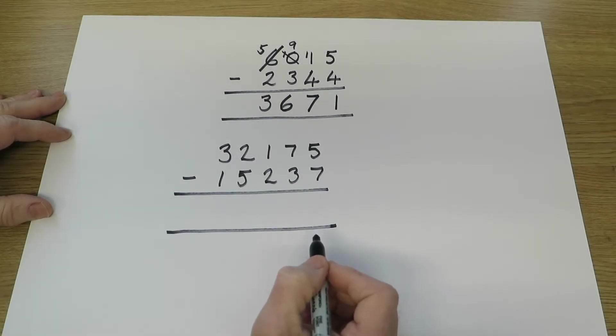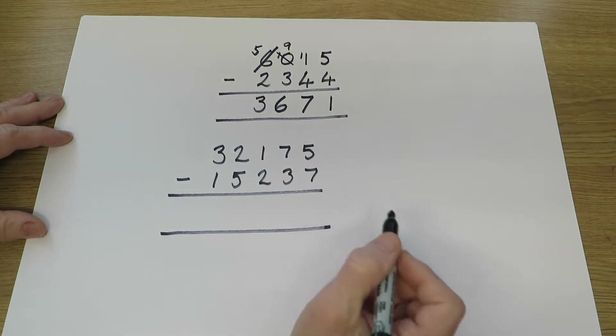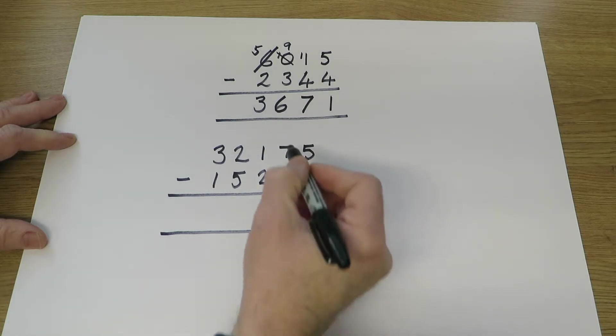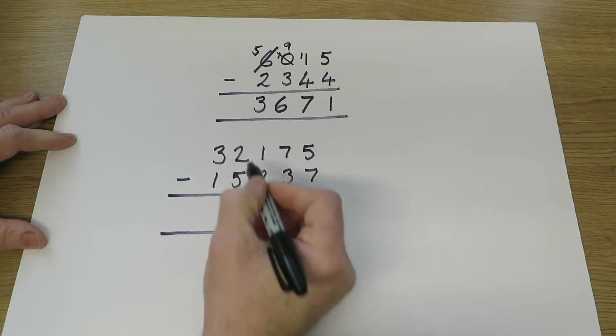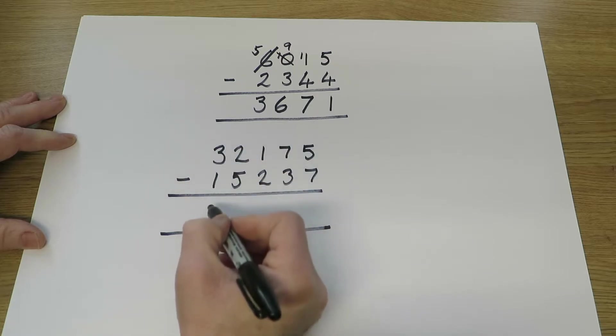Using the same skills, they can move on to even larger numbers. It's important that they understand what each column represents. So those are the units, the tens, the hundreds, the thousands, and the ten thousands.